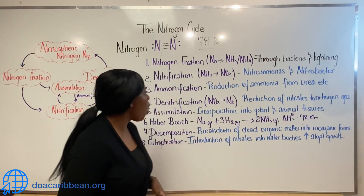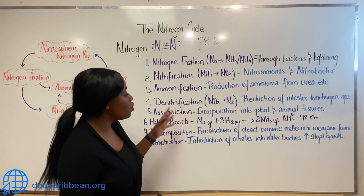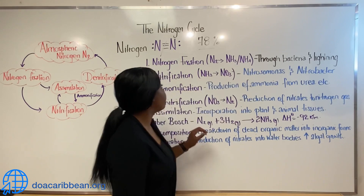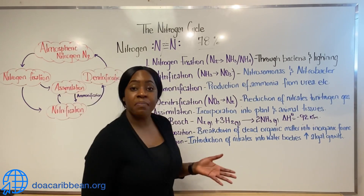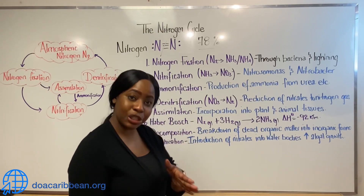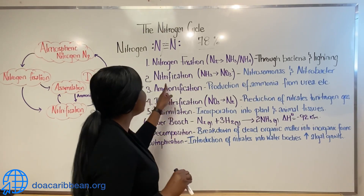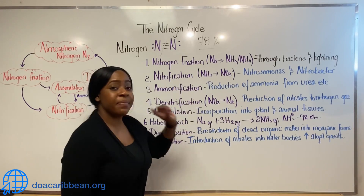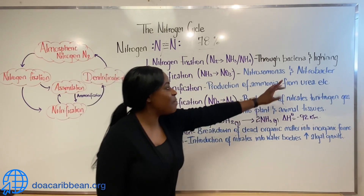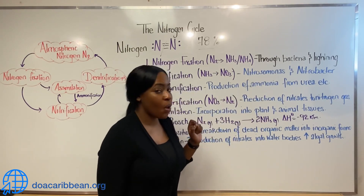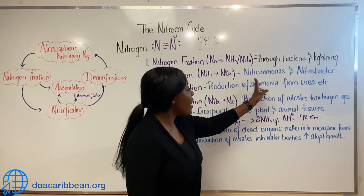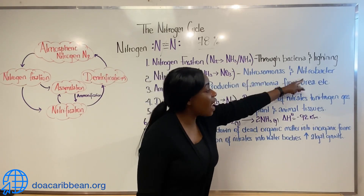Let's talk about how living organisms can use these nitrogenous compounds. The ammonium compounds formed during nitrogen fixation can be oxidized to nitrites and then to nitrates, and this is achieved during nitrification. Similarly to nitrogen fixation, nitrification is aided by bacteria — nitrifying bacteria like Nitrosomonas and Nitrobacter.